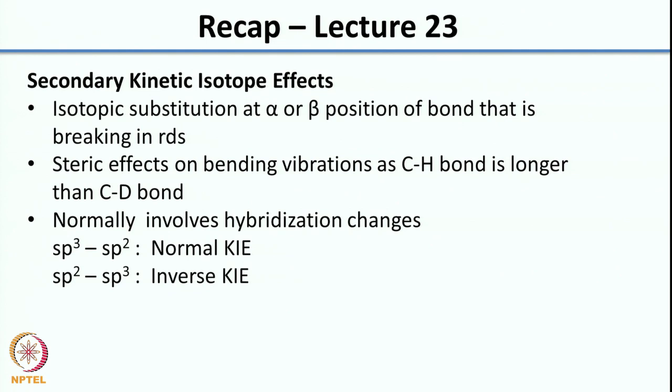Welcome back. In the previous class, we had looked at secondary kinetic isotope effects. In secondary kinetic isotope effects, essentially the bond that is broken in the rate-determining step is not where you are doing the isotopic substitution. The isotopic substitution is done at the alpha or beta position of the bond that is breaking in the rate-determining step.